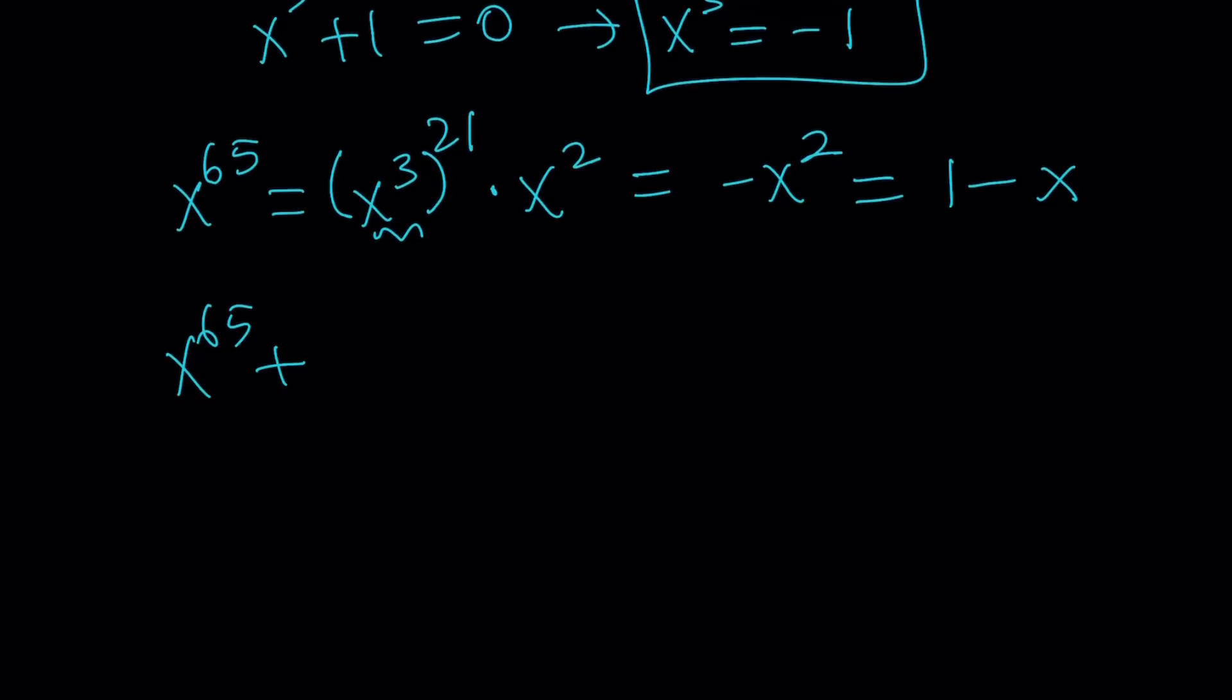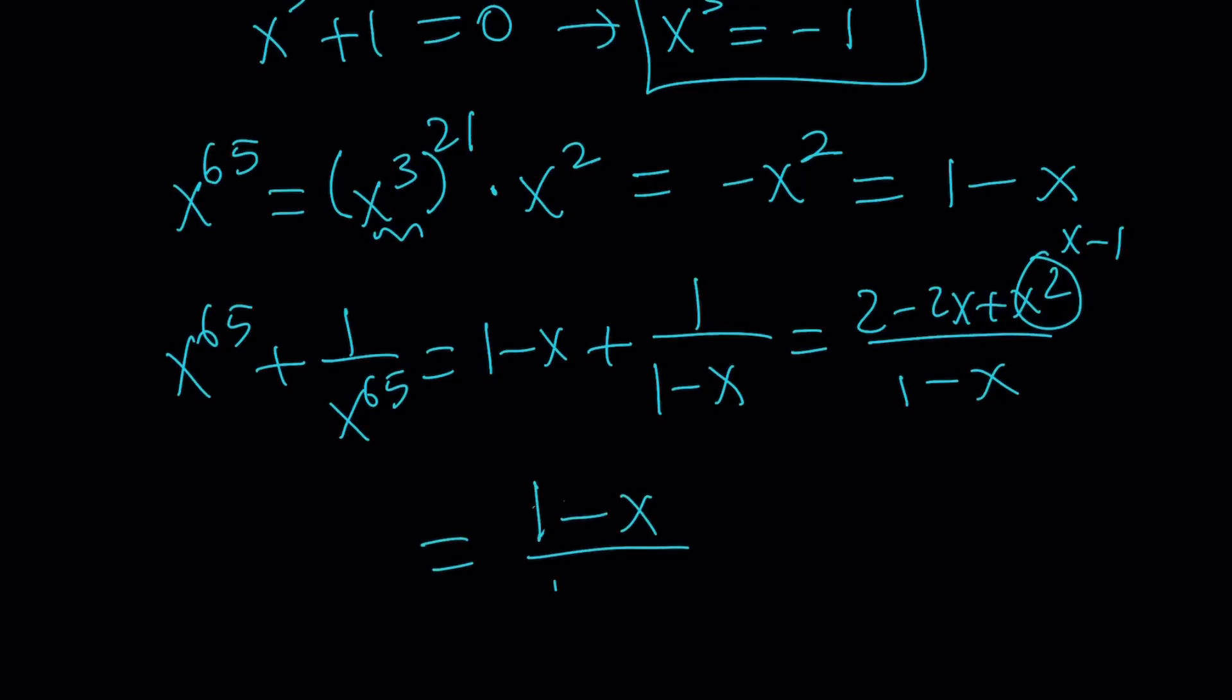So now, again, just like the first method, I can go ahead and replace x to the 65th with 1 minus x. And the other one was with 1 over 1 minus x, making a common denominator. You're going to get the same thing, 2 minus 2x plus x squared over 1 minus x. Replace the x squared with x minus 1. You're going to get 1 minus x over 1 minus x. And that's going to be 1, 1 more time.